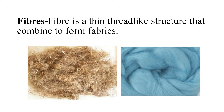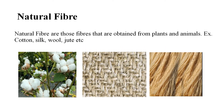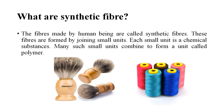Students, fibers are obtained from natural or artificial sources. Natural fibers are those fibers that are obtained from plants and animals. For example, cotton, wool, silk, and jute are natural fibers because they are obtained from plants and animals.